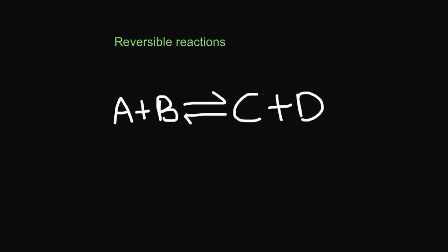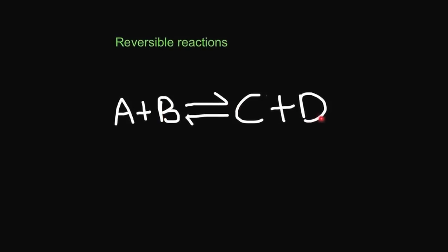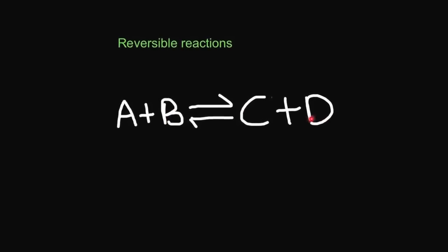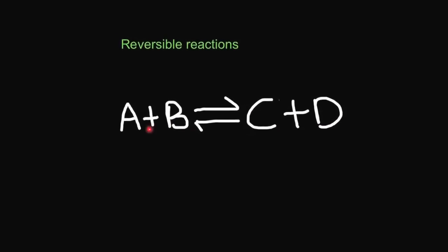Reversible reactions are those which go in both directions. In this example you have A plus B forming C and D. But those C and D can also bump into each other and form A and B.